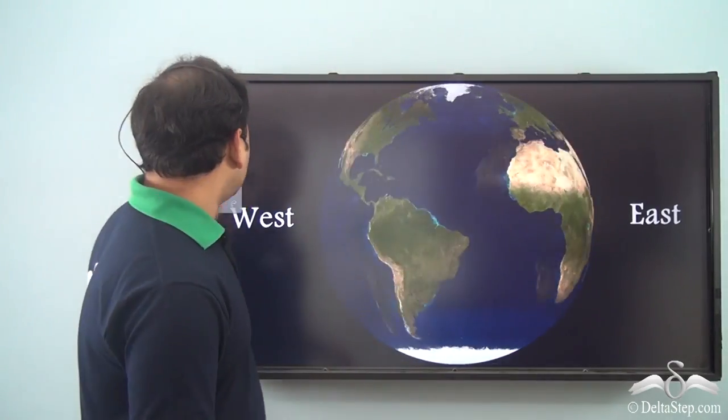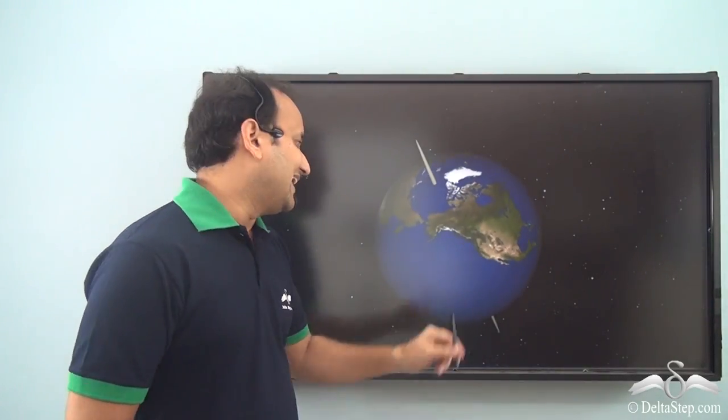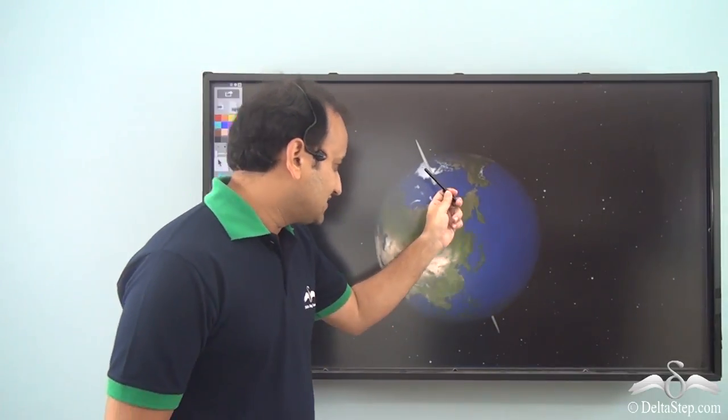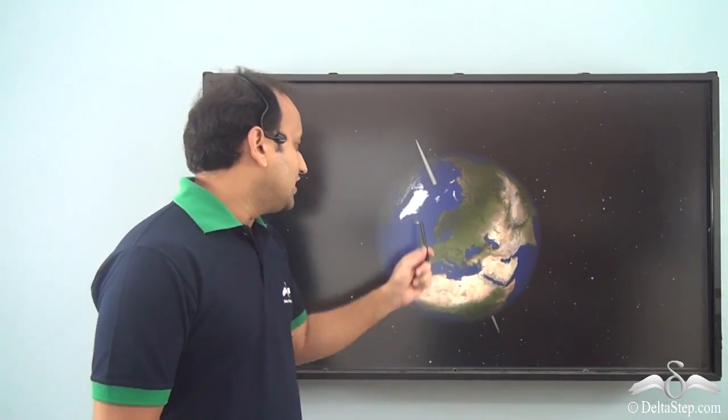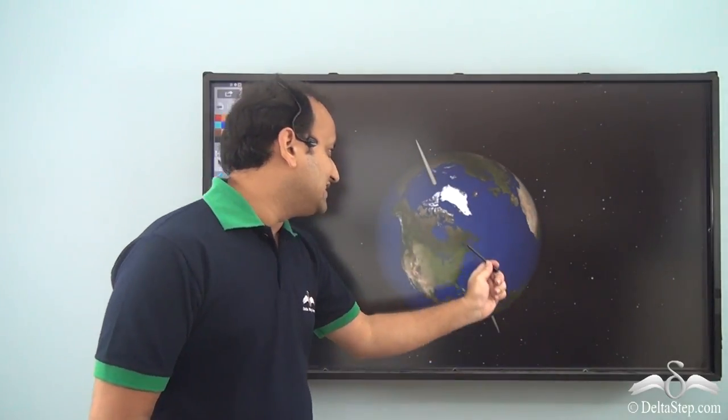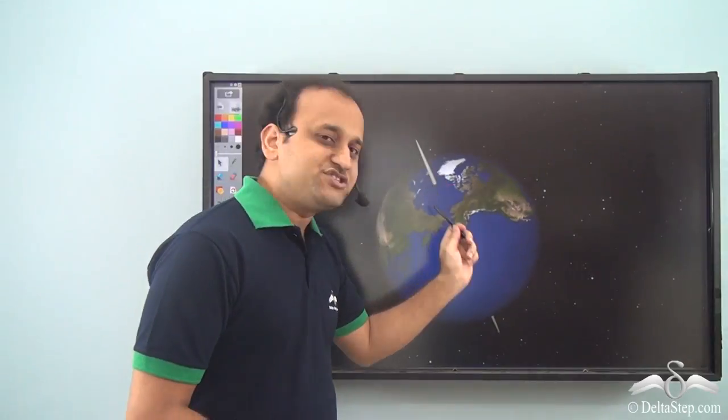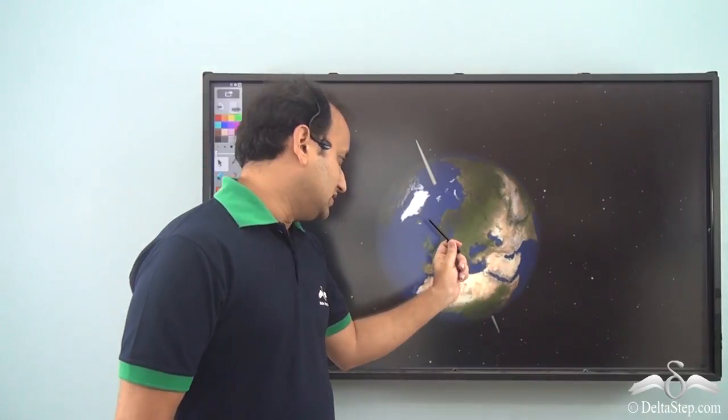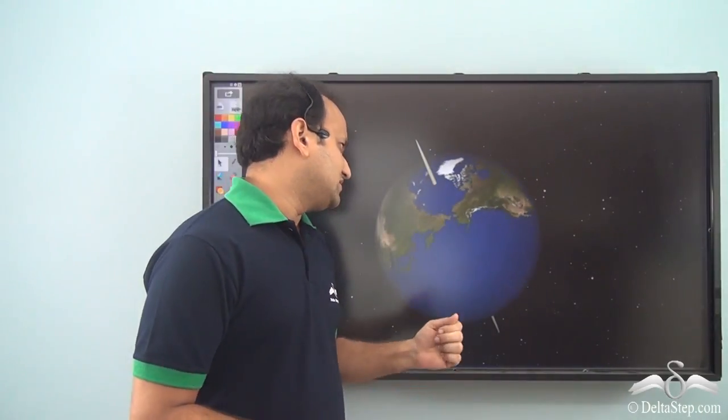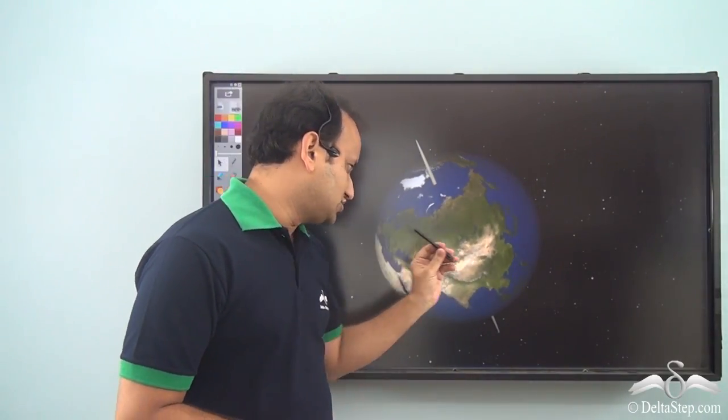Now when the Earth rotates, it's not exactly upright. In fact, it's tilted. You can see here it's tilted and not upright, and if we draw an imaginary line in that tilted direction, then this imaginary line is called the axis of Earth, and the Earth rotates along this axis. But you have understood that this is the axis of Earth and the Earth rotates, but how does it help us know about day and night? What role does it play in day and night? We'll see.